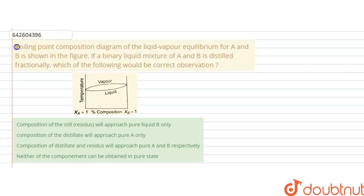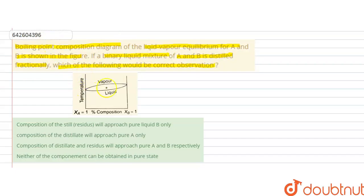Hello students, the question is: a boiling point composition diagram of the liquid-vapor equilibrium for A and B is shown in the figure. If the binary liquid mixture of A and B is distilled fractionally, which of the following observations would be correct? So in this question, we are given a boiling point composition diagram for two components A and B, and we have to find out which of the given observations will be correct.